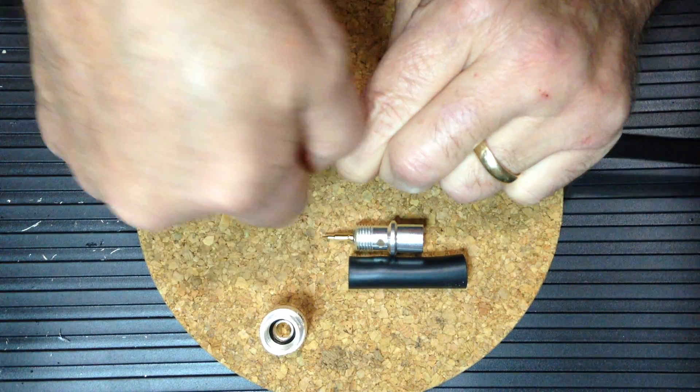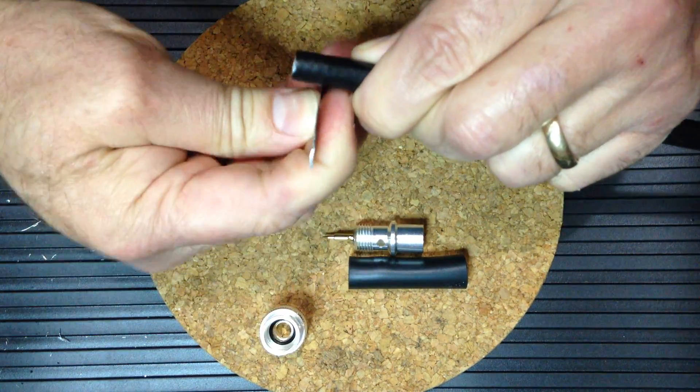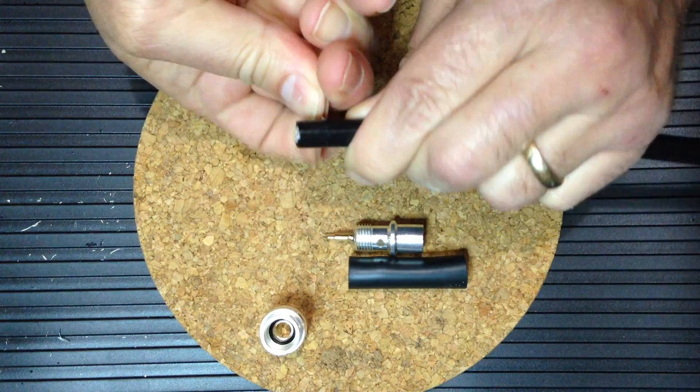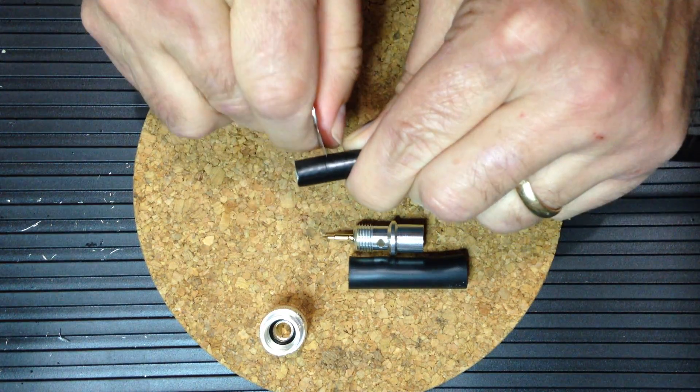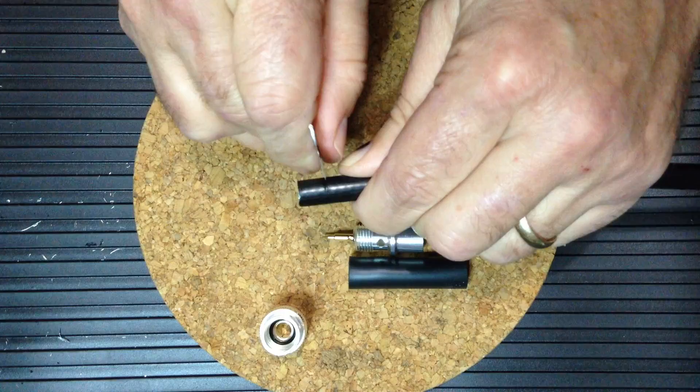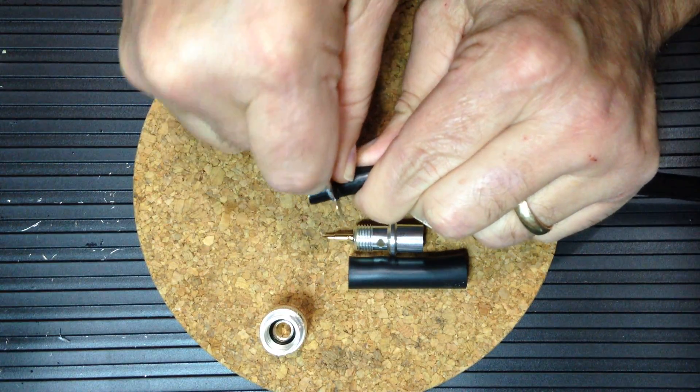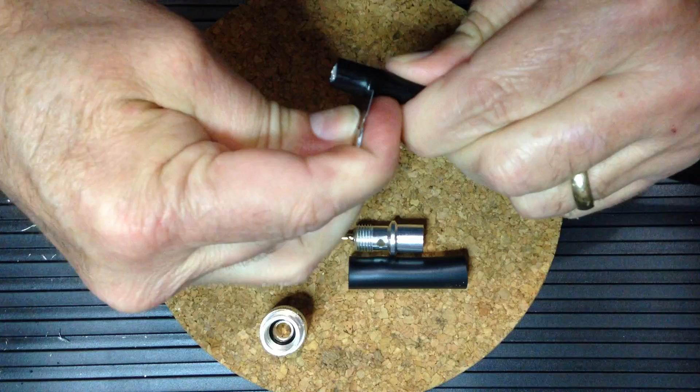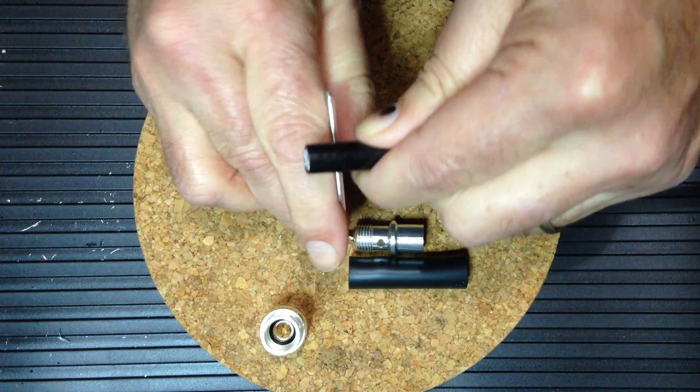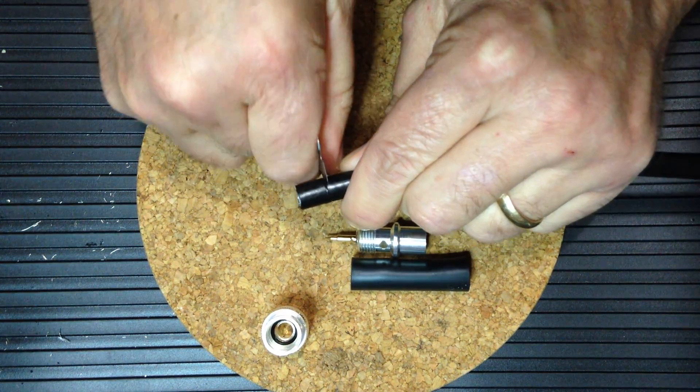We'll start by making a shallow cut in the jacket and then progressively deepen that cut through the shield braid and down into the center dielectric.